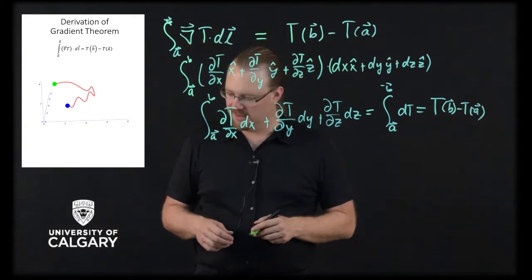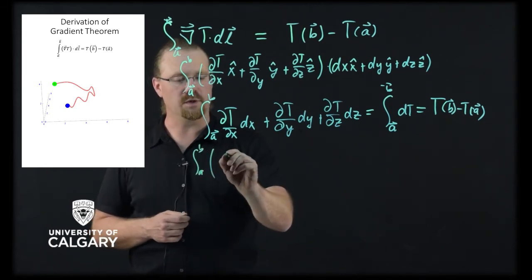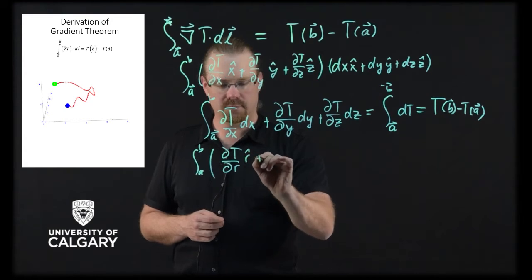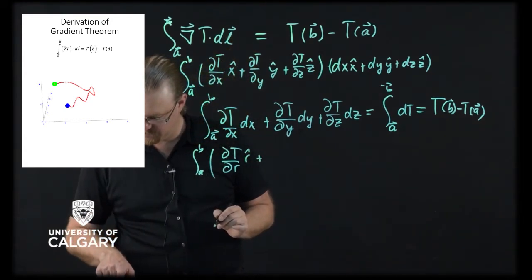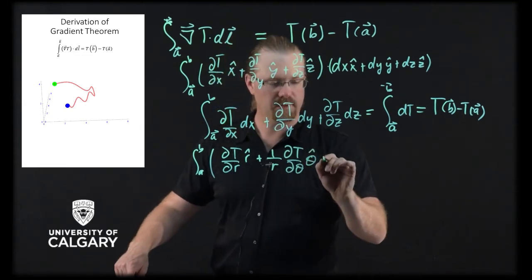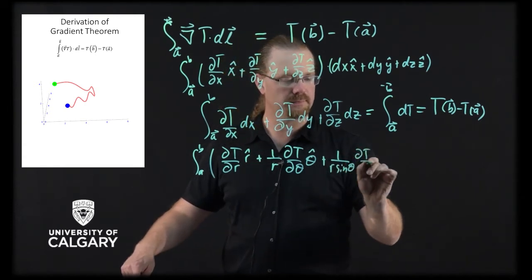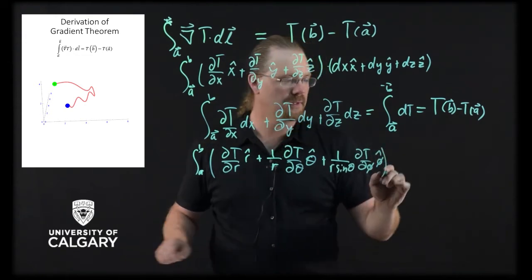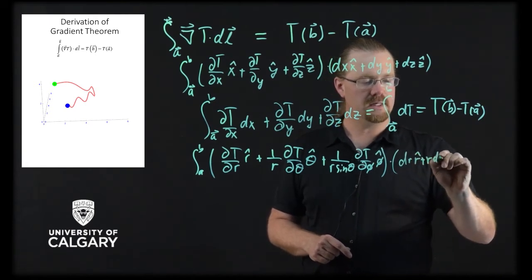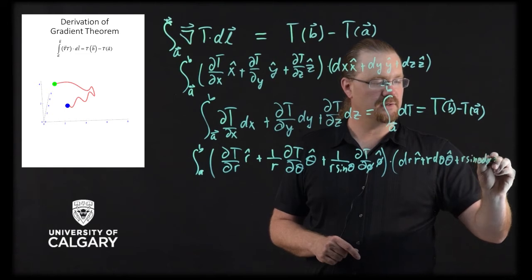If we do the exact same thing in spherical coordinates, our gradient winds up being dT/dr r hat, plus 1 over r dT/d theta theta hat, plus 1 over r sin theta dT/d phi phi hat, dotted with dr r hat, plus r d theta theta hat, plus r sin theta d phi phi hat.